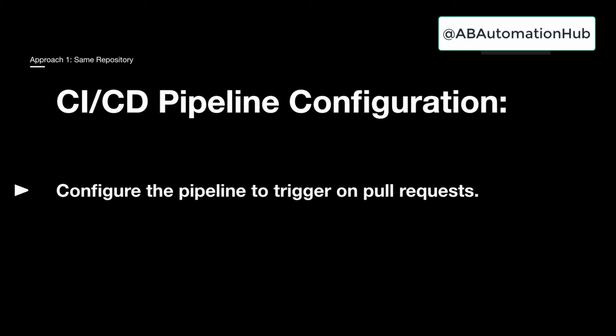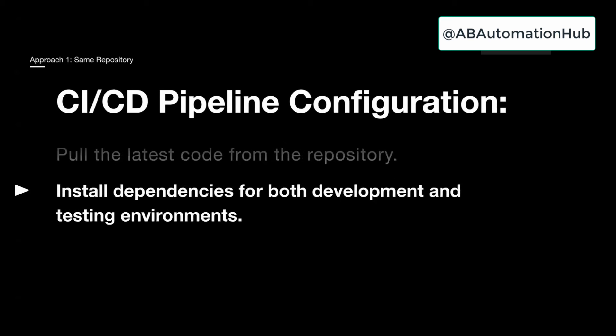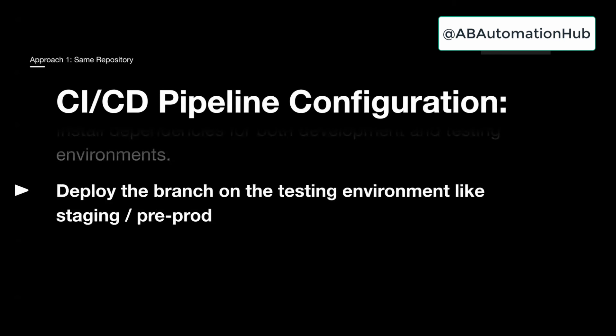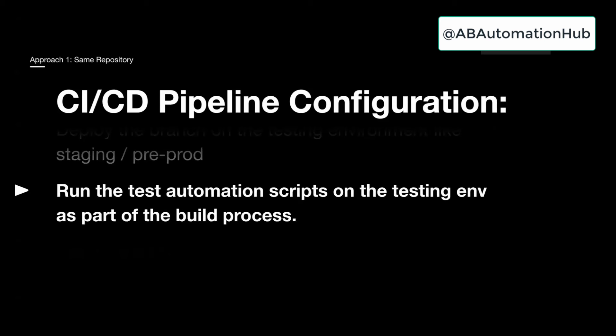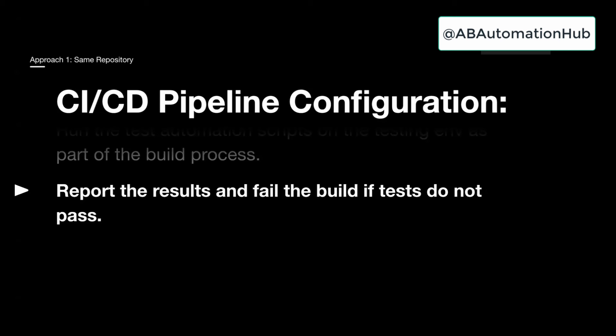The CI/CD pipeline configuration: whenever you raise a pull request, the latest code is pulled from the repository. All dependencies are installed for both development and testing environments. Then the branch is deployed to the testing environment — for example, stage or pre-prod — using GitHub Actions or Jenkins, often handled by the DevOps team via webhook or GitHub Actions directly. Then you run your test automation script on that environment and report the results — fail the build on failure, or merge on success.